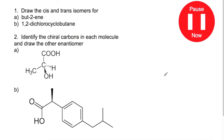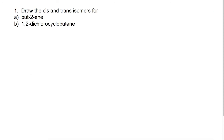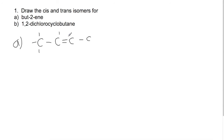Pause the video now and try these questions looking at geometric and optical isomers. For part A, we're looking at drawing but-2-ene. If you were just to draw but-2-ene in a chain, you would draw it like this. Whereas now we're having a look at what is on each side of the molecule.